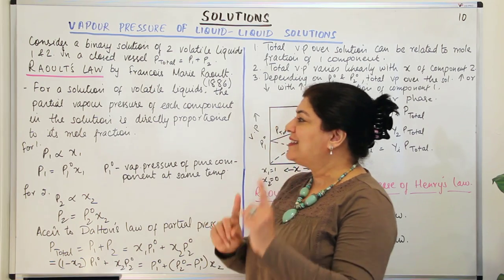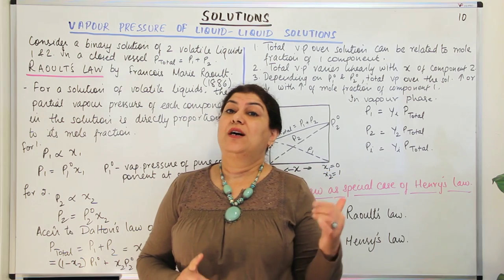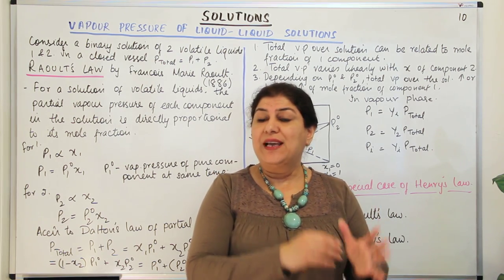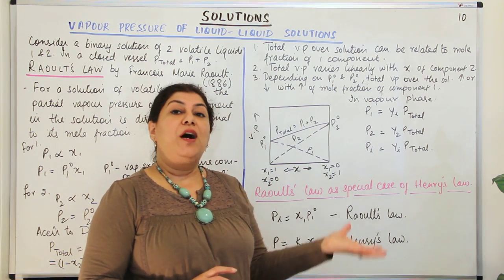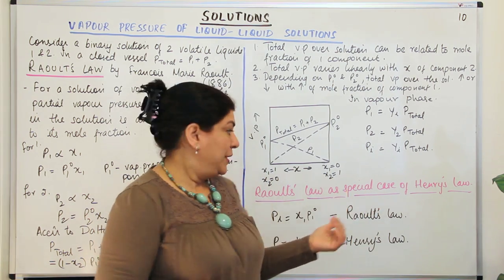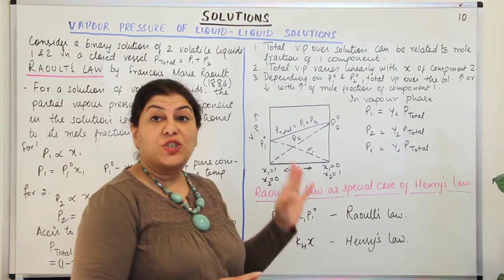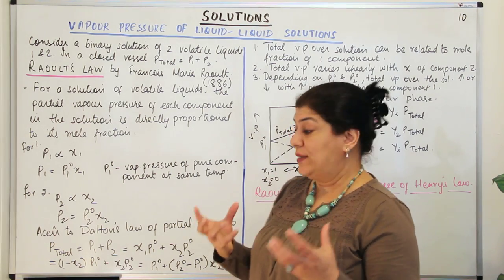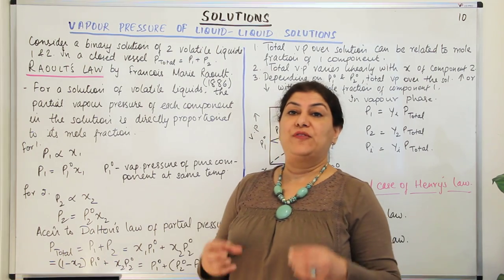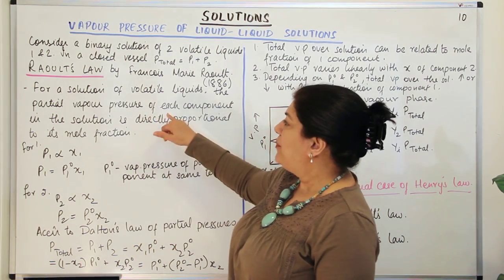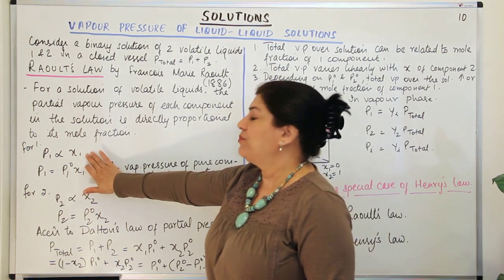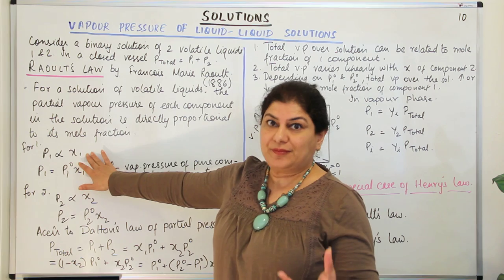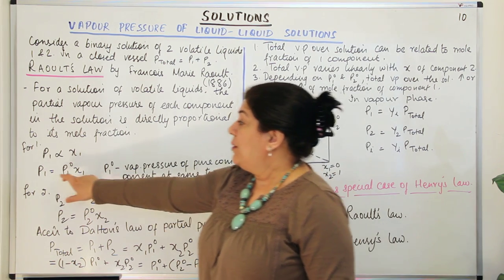If you look at it, this is exactly what Henry also said when we talked about solubility of gases in liquids. He said the mole fraction of the gas in the liquid is directly proportional to its pressure above the solution in a closed vessel — P = KH × X, where KH is Henry's constant. Raoult gave a similar description: for both volatile components, the partial pressure of each component is directly proportional to its mole fraction inside the solution.